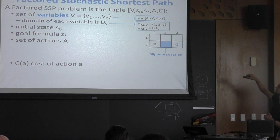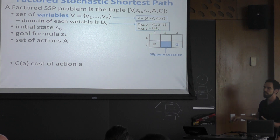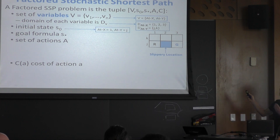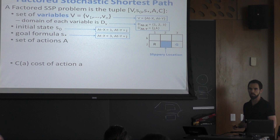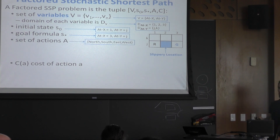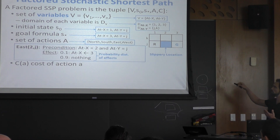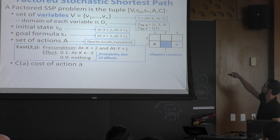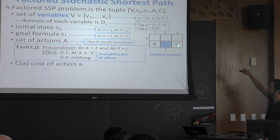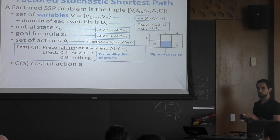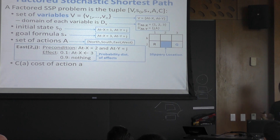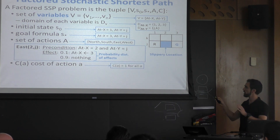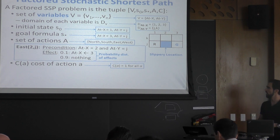We encode this problem with two variables — at_x and at_y — to represent each dimension of the grid. The initial state is a valuation of these variables; the goal is another valuation. The actions are north, south, east, and west, encoded with preconditions, and probabilities appear inside the effects as a probability distribution over deterministic effects. For instance, if the robot is in the slippery position and wants to go east, with probability 0.1 at_x will be updated to 3 (it moves), and with probability 0.9 nothing happens and the robot stays. The cost of actions is a function of just the action — for this example, always 1, but it can be any arbitrary cost.